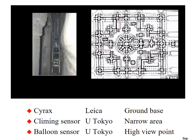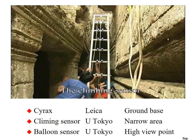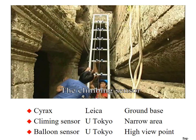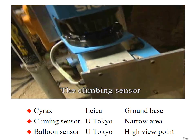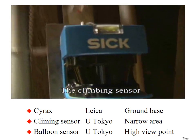To scan the narrow space between the terrace and the corridor, a laser sensor named the Climbing Sensor, which moves vertically along a ladder, had been developed and was used.